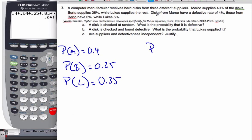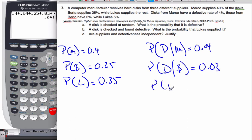The second part, the disks are defective. The probability that disks that come from Marco have a defective rate, so the probability that they are defective given that they came from Marco is 0.04. The probability that they are defective given that they came from Berto is going to be 0.03. And the probability that they are defective given that they came from Lucas is going to be 0.05.